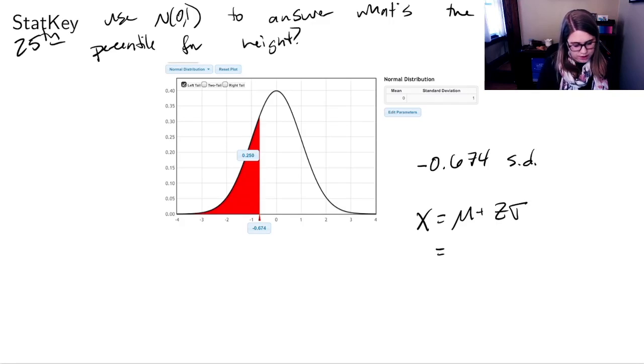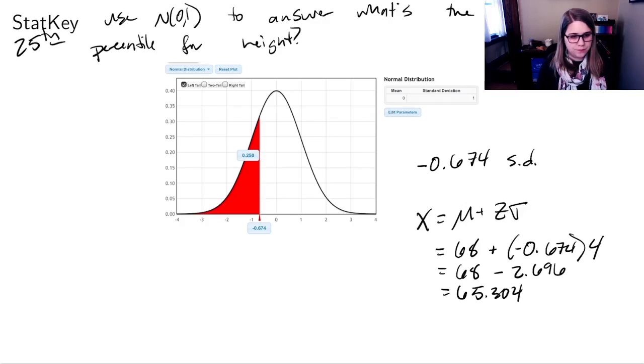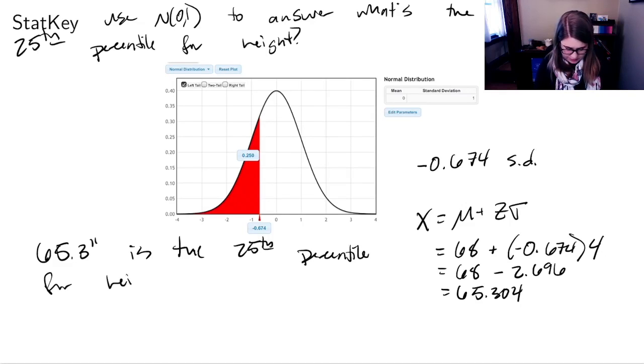So let's see. What do I know? I know mu, that is the mean, which was 68 inches. And then I know z, that was the negative 0.674. And I know sigma, that was the four. So this is 68 minus 2.696, which is 65.304. So 65.3 inches is the 25th percentile for height. And we use the normal distribution and then we converted back to figure that out.